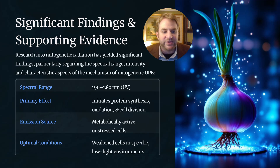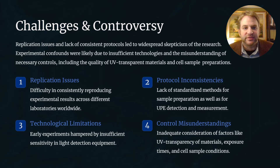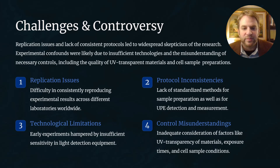The optimal conditions for reception of mitogenetic radiation is in weakened cells in specific low-light environments, where sample preparation of the receiver cells is very important to reproducing the effect. Although many laboratories were able to successfully reproduce the mitogenetic effect, replication issues and lack of consistent protocols led to widespread skepticism of the research. Experimental confounds were likely due to insufficient technologies and misunderstandings of the necessary controls, including the quality of UV-transparent materials and sample preparations. Replication difficulties across different laboratories worldwide could be attributed mainly to protocol inconsistencies due to a lack of standardized methods for sample preparation, as well as for UPE detection and measurement.